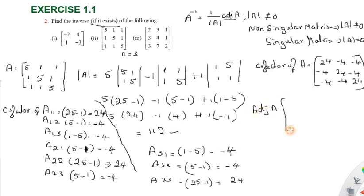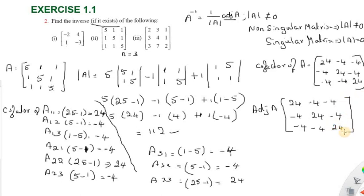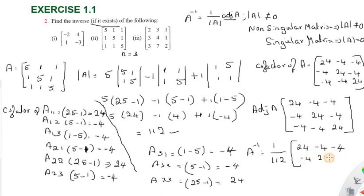The adjoint of A is the transpose of the cofactor matrix. Taking the transpose: row and column are interchanged. The adjoint matrix has entries 24, minus 4, minus 4 in the first row; minus 4, 24, minus 4 in the second row; minus 4, minus 4, 24 in the third row. A inverse equals 1 by determinant of A, into adjoint of A.